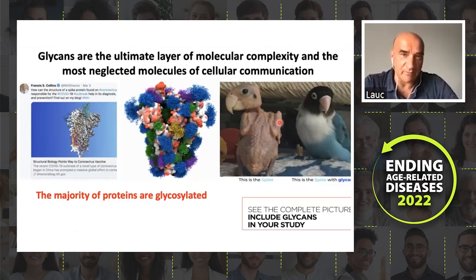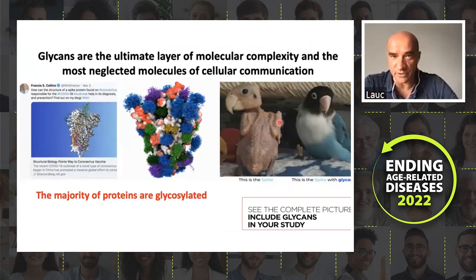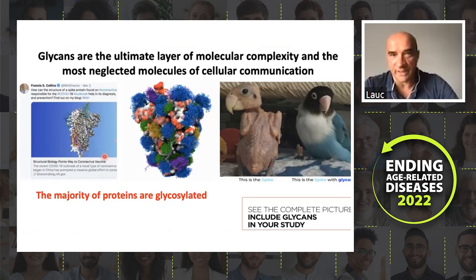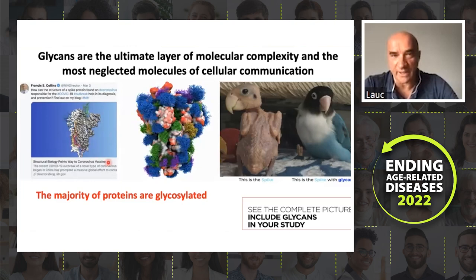What we see revolving in the middle is the famous S-glycoprotein of SARS-CoV-2 virus, which stopped the planet for two years, and everything hairy which you see on the surface of the protein are actually glycans. But unfortunately, many scientists focus on the polypeptide part — even the director of NIH was blogging about the S-glycoprotein without a single glycan on its surface.